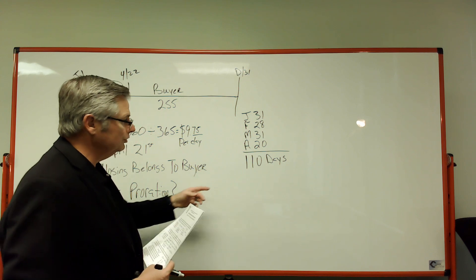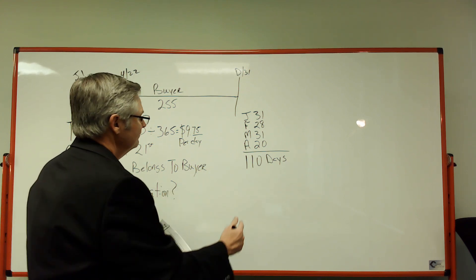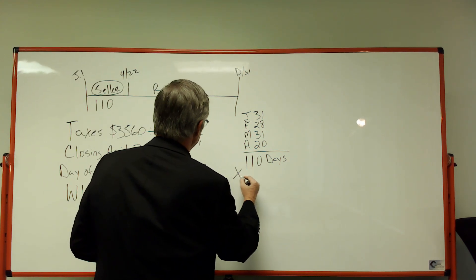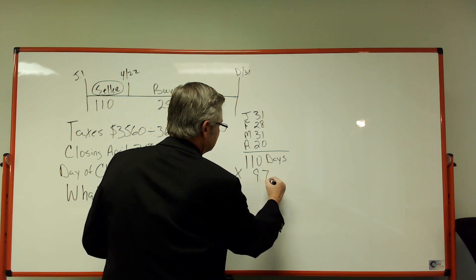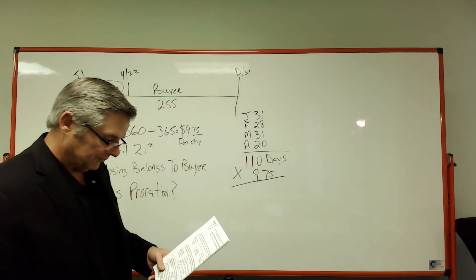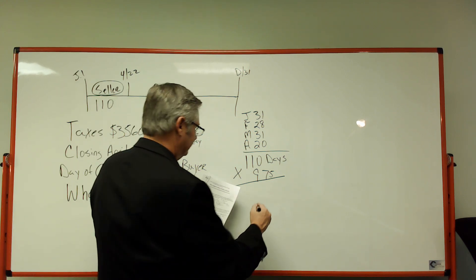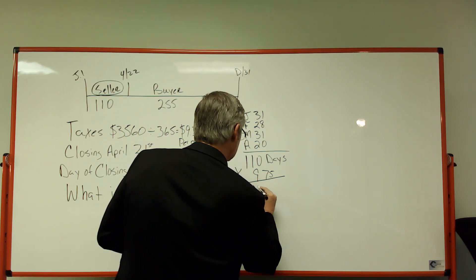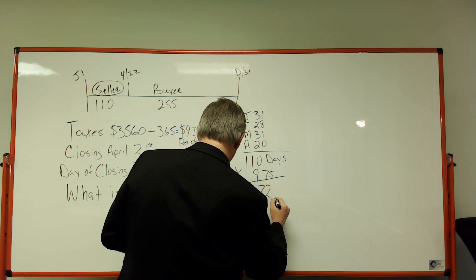So we're going to use that for our calculation and then we're going to multiply that times $9.75 a day, and that comes out to $1,072 and 50 cents.